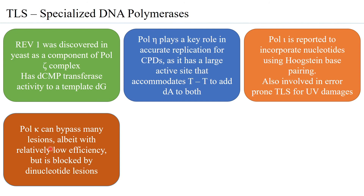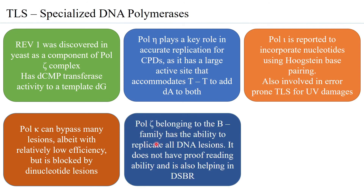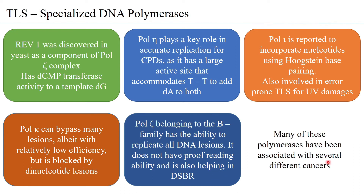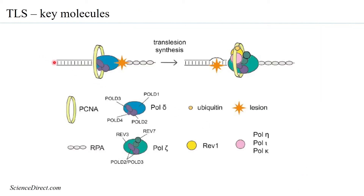Pol zeta, which belongs to the B family, has the ability to replicate all DNA lesions and does not have proofreading ability at all. It is also observed to help in double strand break repair. Many of these polymerases have been associated with several different cancers, because TLS is subject to adding wrong nucleotides leading to point mutations, and many of these point mutations can lead to different cancers.